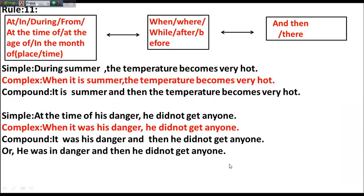If you get 'during,' 'at the time of,' 'at the age of,' 'in the month of' in simple sentences, you can use 'when,' 'where,' 'why,' 'after,' or 'before' to make complex sentences, and use 'and' to make compound sentences. For example, 'at the time of his danger' can become 'when it was his danger' or 'when it was the time of his danger.'